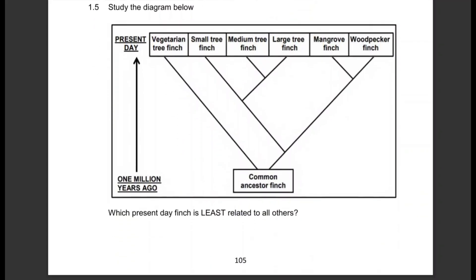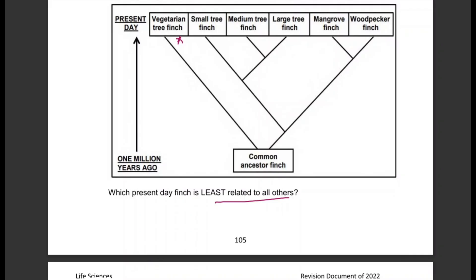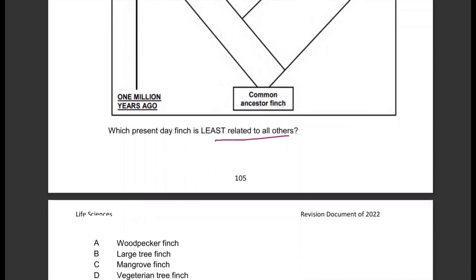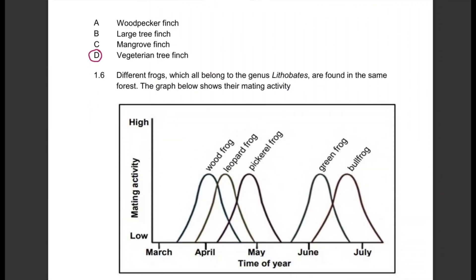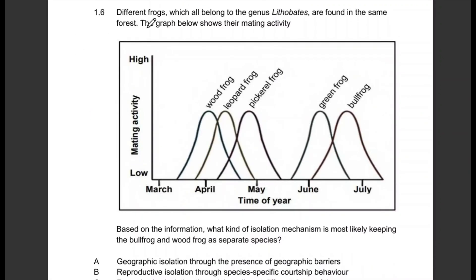Question 1.5: You are given a phylogenetic tree. Study the diagram below — which present-day finch is least related to all others? The answer is D: the vegetarian tree finch.